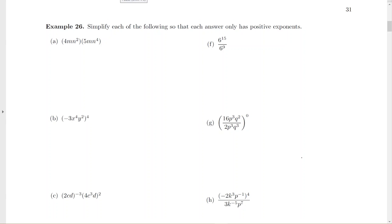We'll be using the laws of exponents to work out these problems. For part A, when you multiply like bases, you add the exponents. With the numbers, though, we multiply like normal. So 4 times 5 will give me 20, and then m to the 1 times m to the 1 gives me m to the 2.